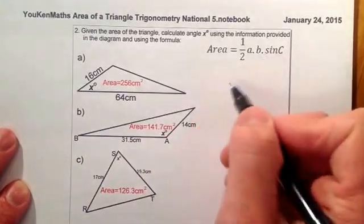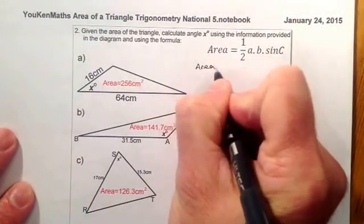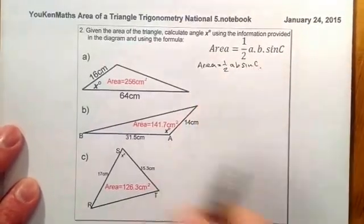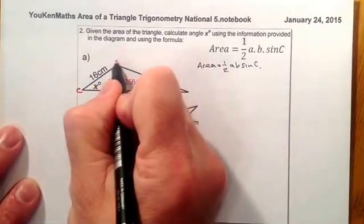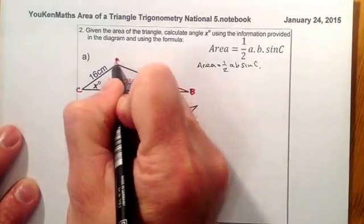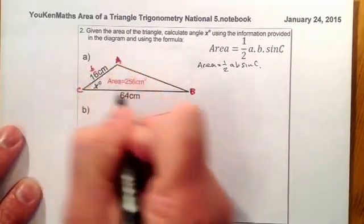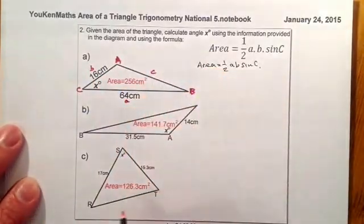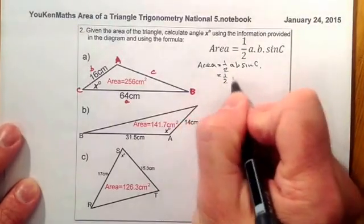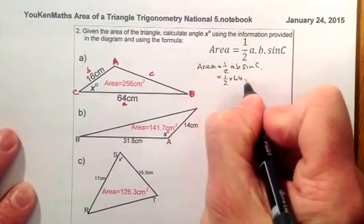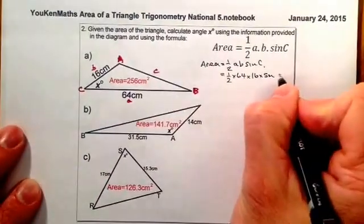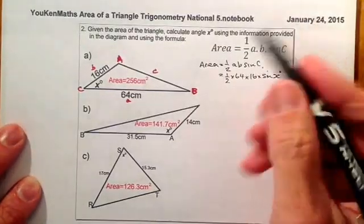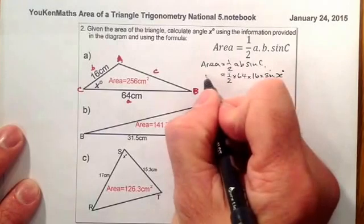I can see the triangle is set up correctly, so I'll start with the formula: area equals half AB sine C. I'll label the angle C, and the two sides A and B. Substituting in: half times A, which is 64, times B, which is 16, times sine x — I don't know that yet. I do know the area is 256, so: 256 equals half times 64 times 16 times sine x.